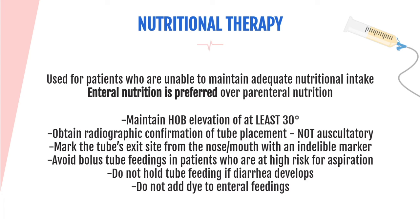For the CCRN, it's important to know the latest evidence-based practice: maintain head of bed at least 30 to 45 degrees; obtain radiographic confirmation of tube placement with a chest x-ray — do not inflate air and auscultate, as that is not evidence-based practice; mark the tube's exit site with an indelible marker. Avoid bolus feedings for high-aspiration-risk patients — use a slower continuous rate instead. Do not hold tube feeding if diarrhea develops, and do not add dye to enteral feedings.